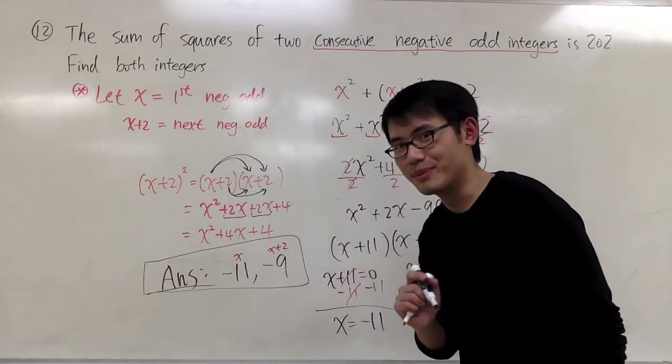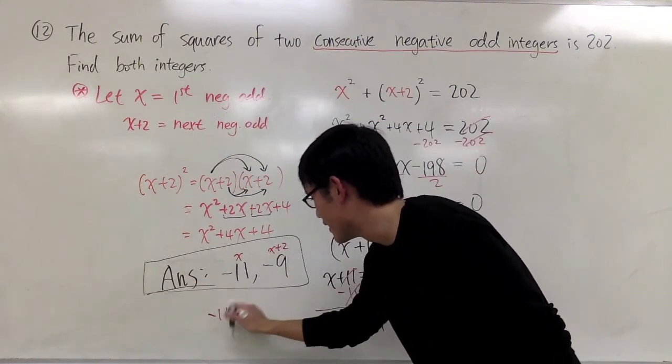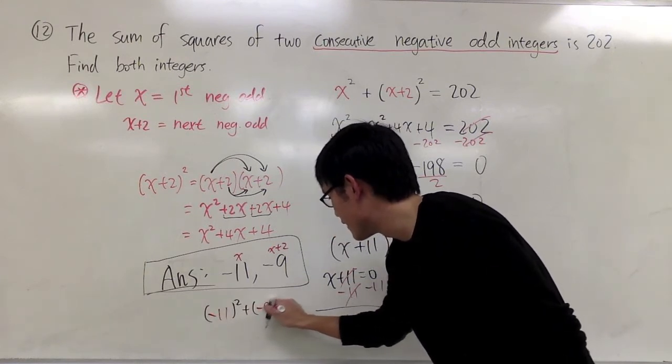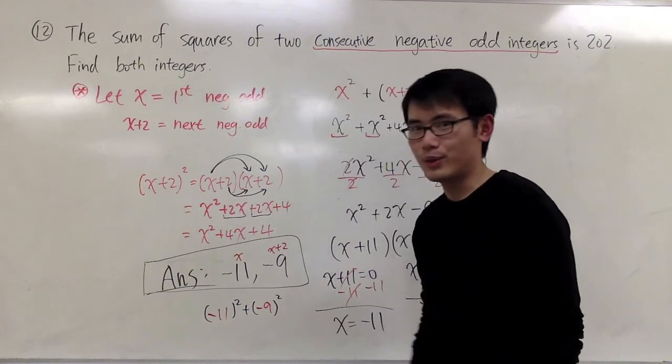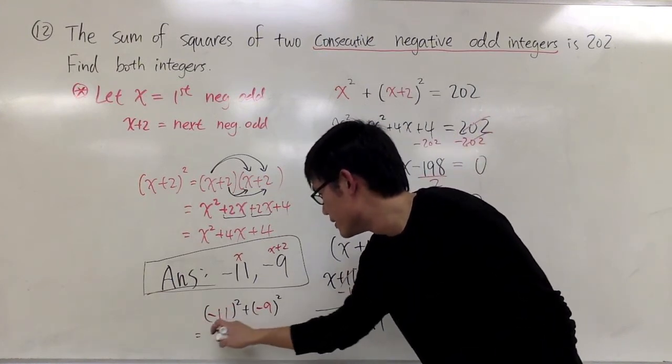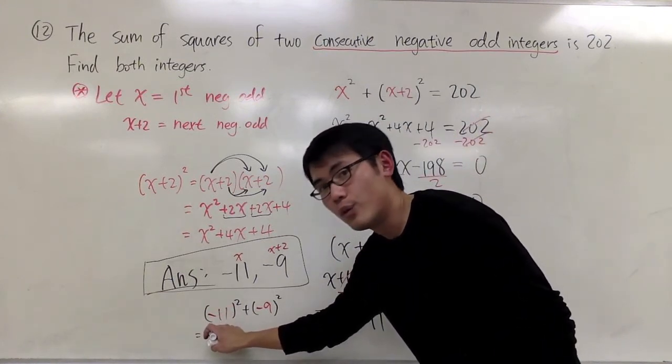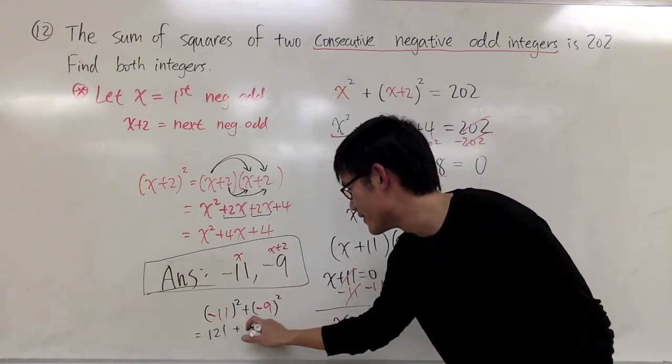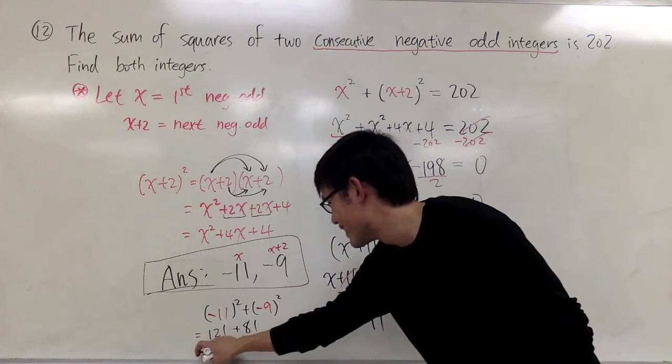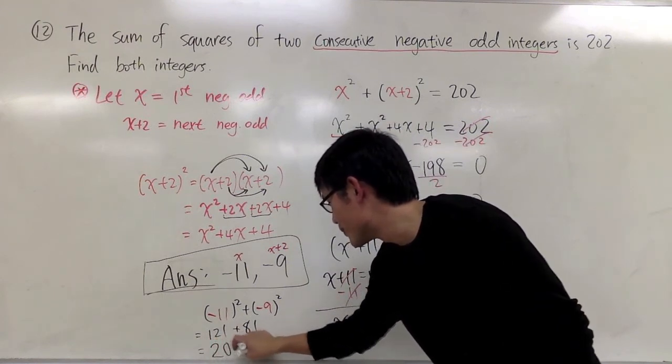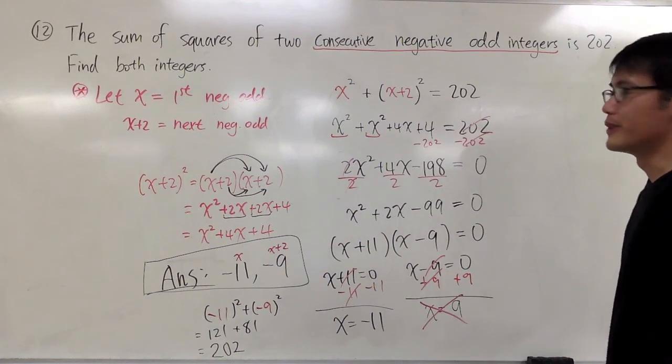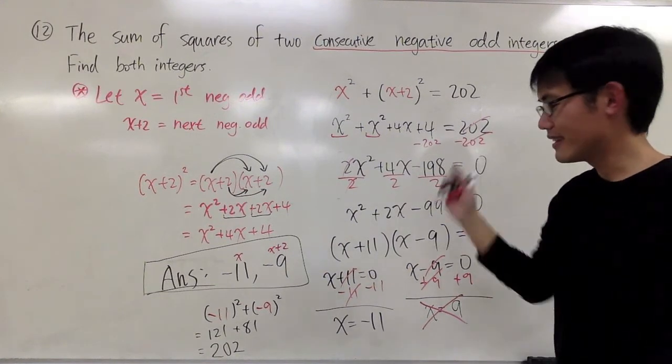Perhaps this is just a bonus. You can do a quick check. Negative 11 squared plus negative 9 squared. What do we get? This is positive 121, and this is positive 81. And as you can see, this is 202, which satisfies the original question. And that's it.